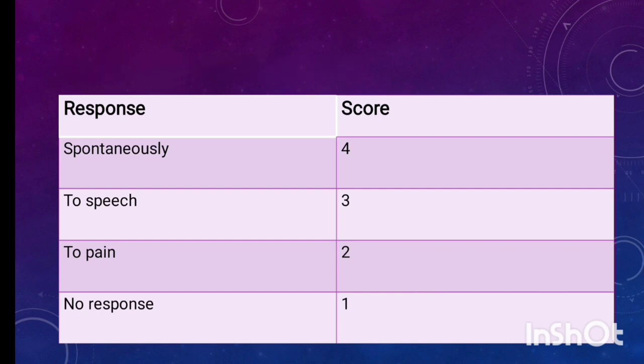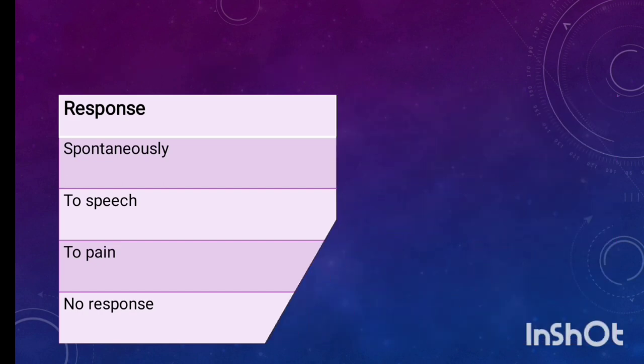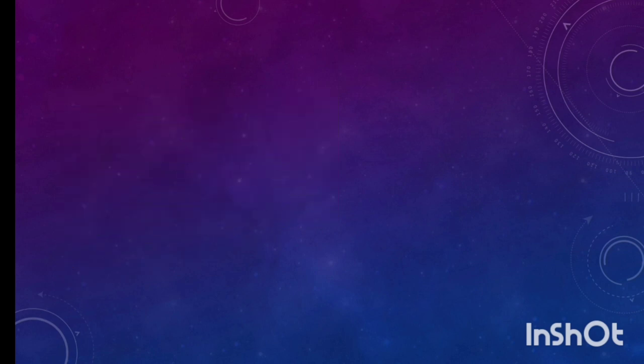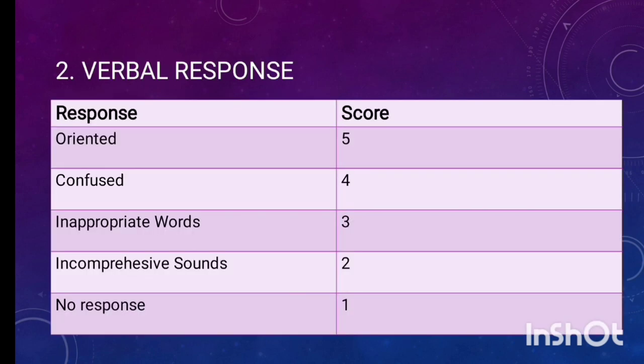Then next we'll see the verbal response. In this there are total five components. The first one is oriented and the scoring is 5. The patient who is oriented to time, place and person, we'll give this score 5. Then the next one is confused and the scoring is 4.